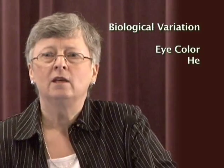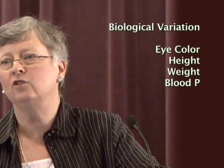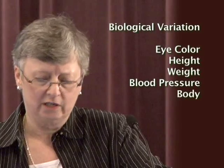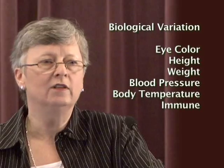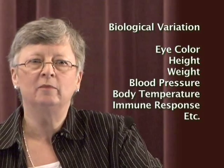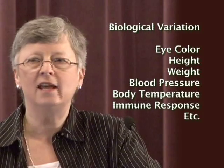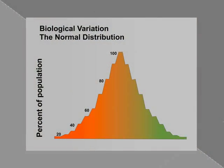Biological variation can be seen in almost any characteristic that you wish to point out — characteristics like your eye color, your height, weight, your blood pressure — all kinds of characteristics follow a distribution. So not all of us have exactly the same temperature. If we took everybody's temperature right now, it would not be 98.6; that's the average. There would be some above, some below. And so if we would plot all of those data, we would find what's called a normal distribution.